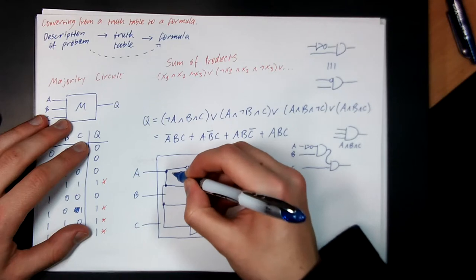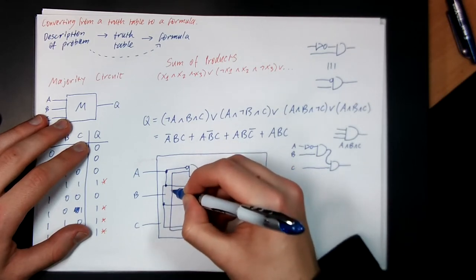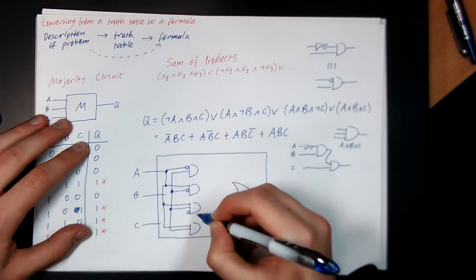So now we're going to connect all the Bs. B goes to every gate. And then the Cs.